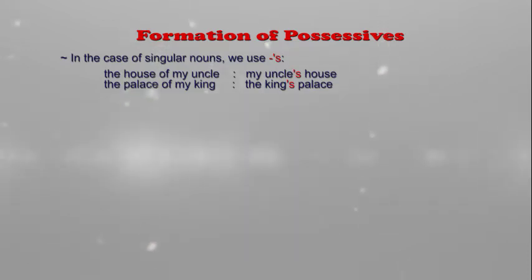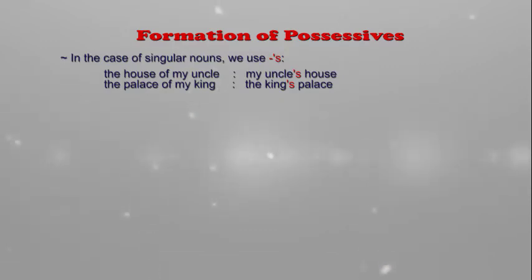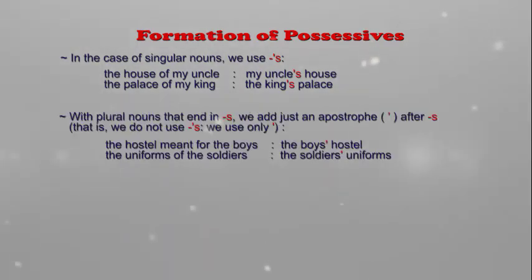The second example: the palace of my king. Here, the palace belongs to the king. So in the possessive form it becomes 'the king's palace' — king, apostrophe s, then palace.